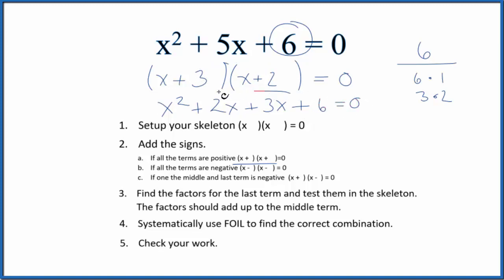So x squared, this is 5x here, plus 6. That's the equation. So this is correct. We found the factors here. We're not quite done yet, though. One last thing.